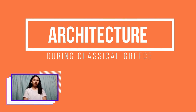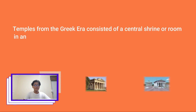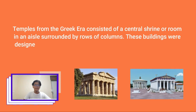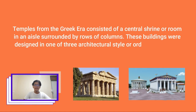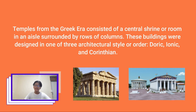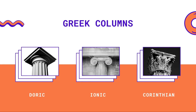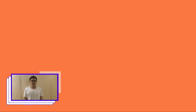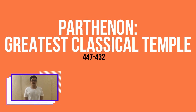For our last topic, here is the Greek architecture. Temples from the Greek era consisted of a central shrine or room surrounded by rows of columns. These buildings were designed in one of three architectural orders: Doric, Ionic, or Corinthian. The Parthenon, built from 447 to 432 BC in Athens, is the greatest classical temple, as you can see in the picture.